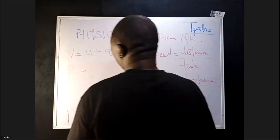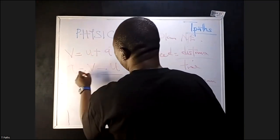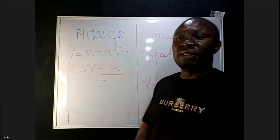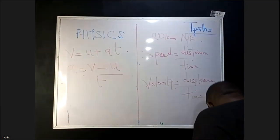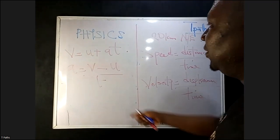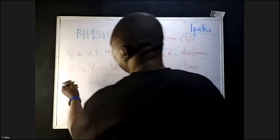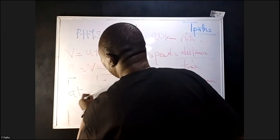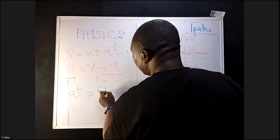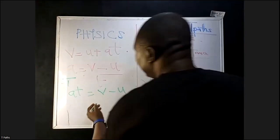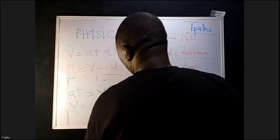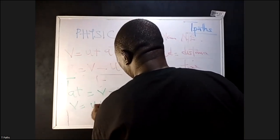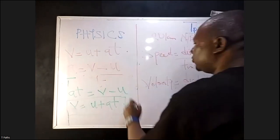Acceleration is changing velocity all over time. For you to remember this first equation, just know that your acceleration is changing velocity all over time. When you want to make V the subject formula, you cross-multiply — A times T equals V minus U. Making V the subject formula, you're going to have V equals U plus AT. That's how they derive this first equation of motion.